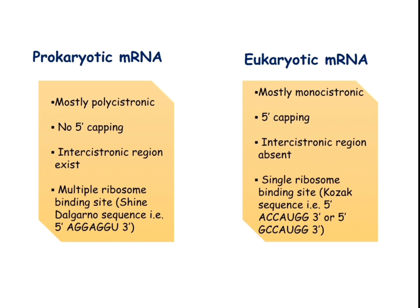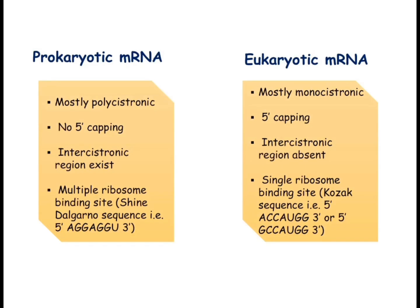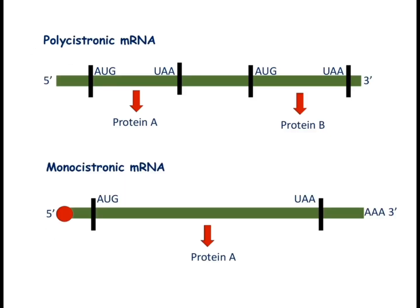The ribosome gets attached with the Shine-Dalgarno sequence part of the prokaryotic mRNA, and then the translation process gets started. But in case of eukaryotic mRNA, only a single ribosome binding site is present on a single mRNA, meaning a single kind of protein will be synthesized from a single mRNA. The ribosome binding site in eukaryotes is the Kozak sequence, which can be ACCAUGG or GCCAUGG.